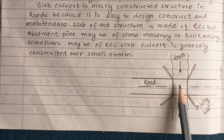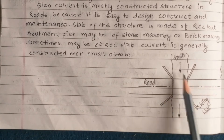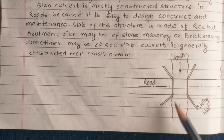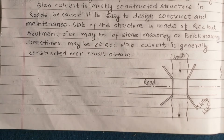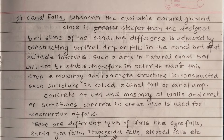Canal falls: whenever the available natural ground slope is steeper than the designed bed slope of the canal, the difference is adjusted by constructing a vertical drop or falls in the canal bed at suitable intervals.